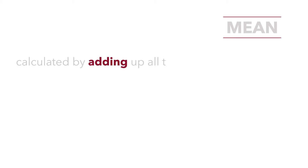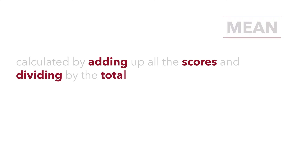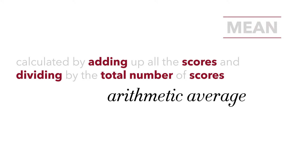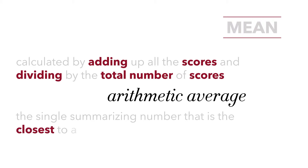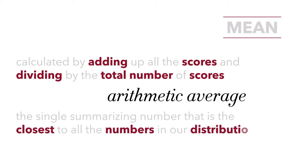The mean is the measure of central tendency that is calculated by adding up all the scores and dividing by the total number of scores. It's an arithmetic average. The mean is the single summarizing number that is the closest to all the numbers in our distribution, calculated by adding up all of our values and dividing by the total.